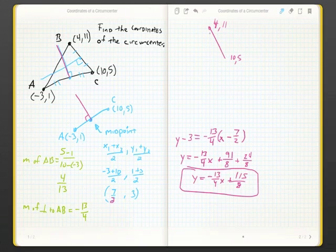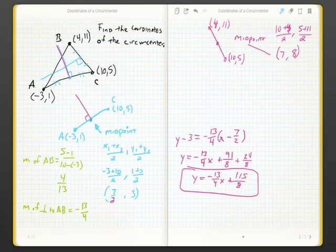Now, we have the other... You can choose AB if you want to, but in this case, I just chose BC. And I'm finding the midpoint again. So, 10 plus 4 over 2 and 5 plus 11 over 2 gives me 7 and 8 for the midpoint there. Boom.